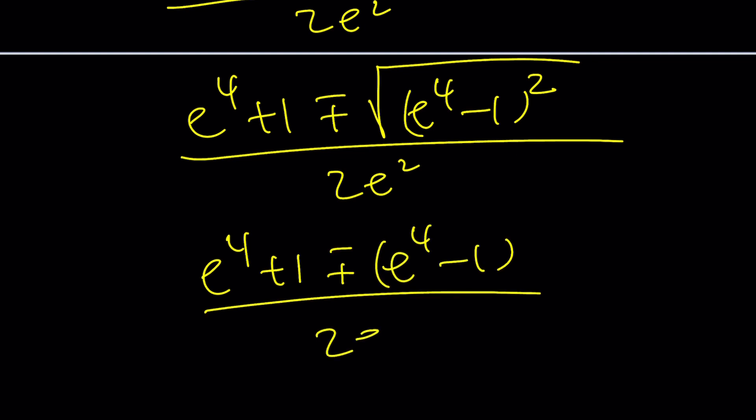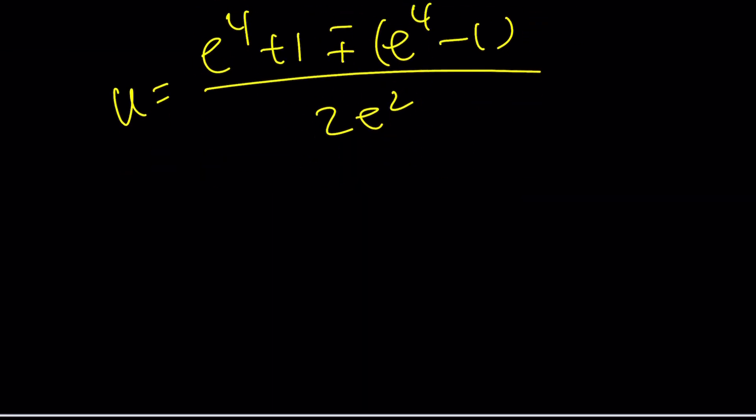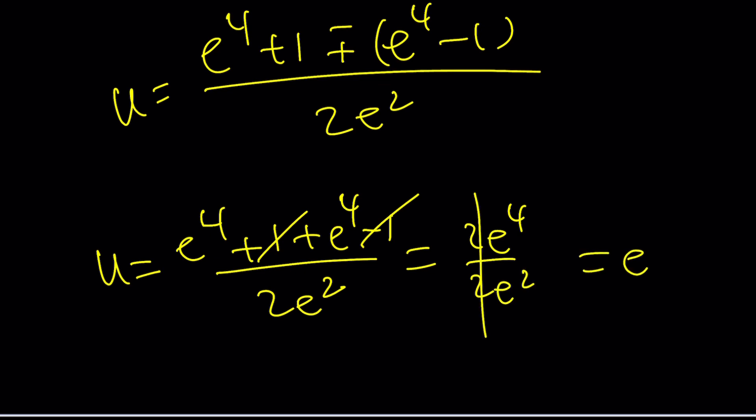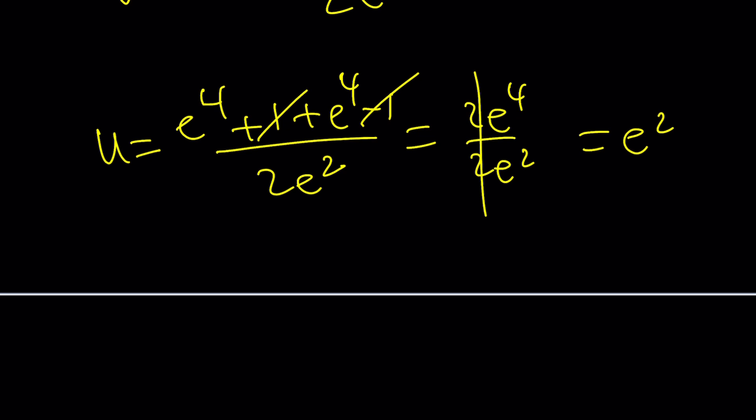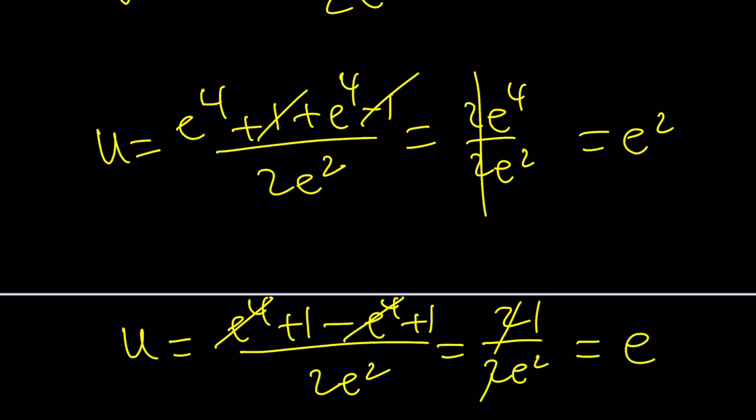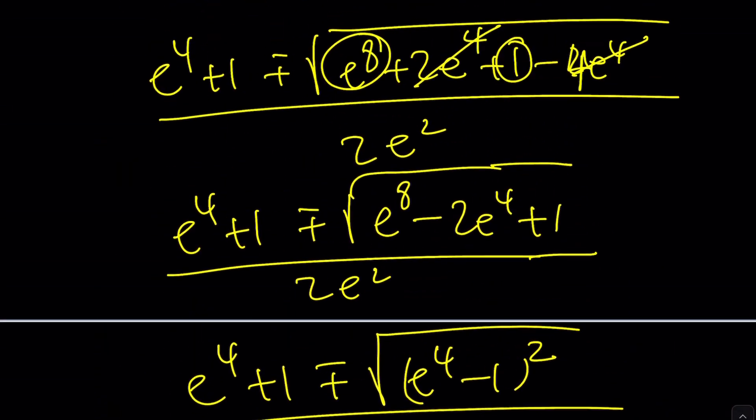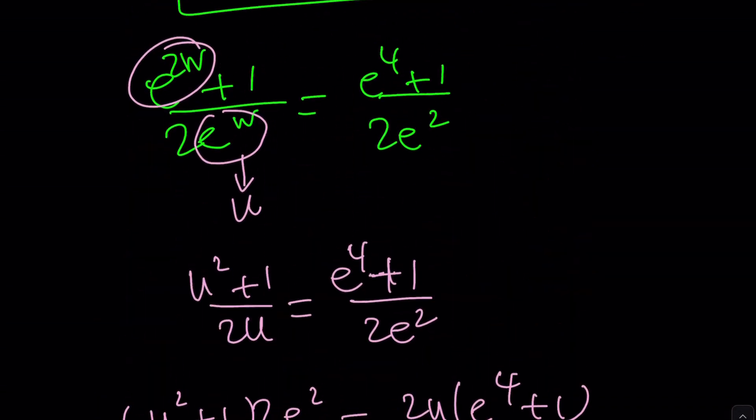And then let's go ahead and split it up into two solutions. Now remember these are the u values. We still have to go back substitute. But if I take the first one as a plus sign, one cancels out. I get 2e to the fourth divided by 2e squared. And that'll be e squared. So one of the solutions is e squared. The other solution is going to be e to the fourth plus one minus e to the fourth plus one divided by 2e squared. E to the fourth is going to cancel out. We're going to get 2 over 2e squared. And that'll be 1 over e squared or e to the power negative 2. So what is u? u is or u are e to the power w.